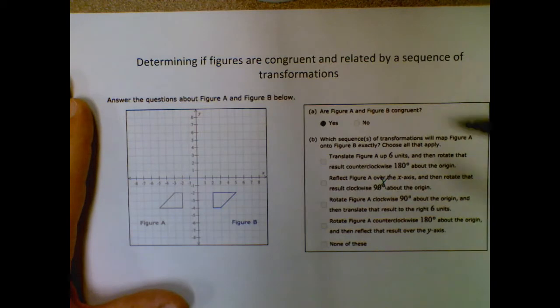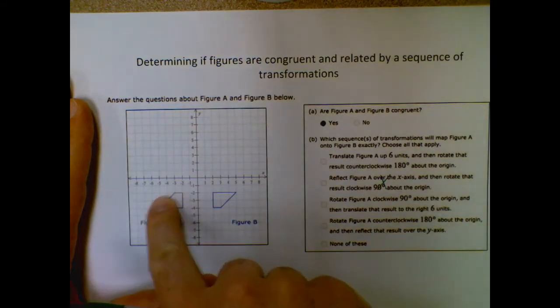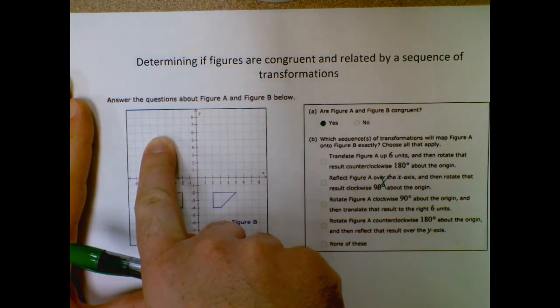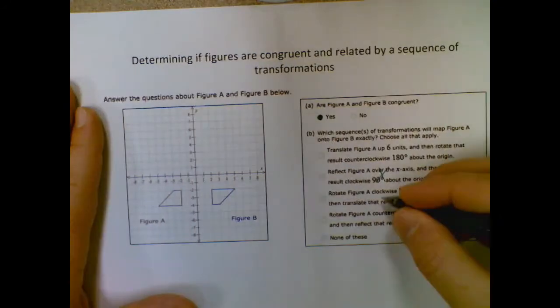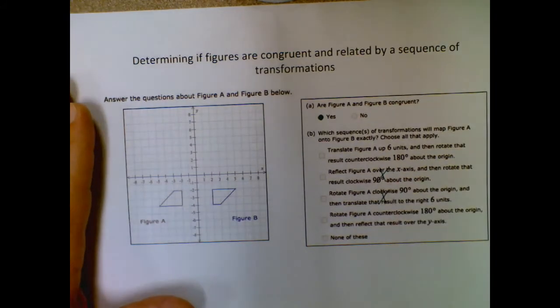Rotate figure A clockwise 90 degrees about the origin. So clockwise would be up here. Then translate that unit six units to the right. That will also be in the first quadrant instead of the fourth.